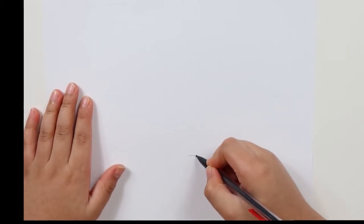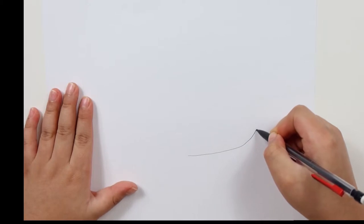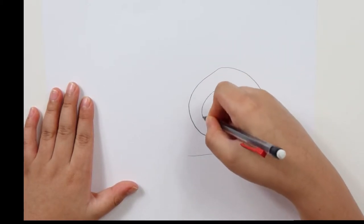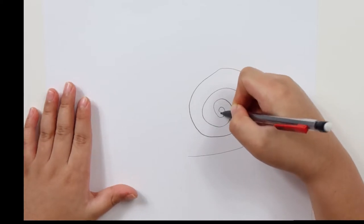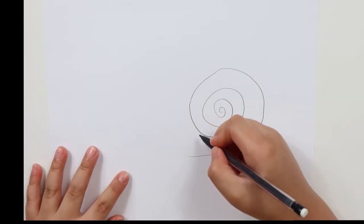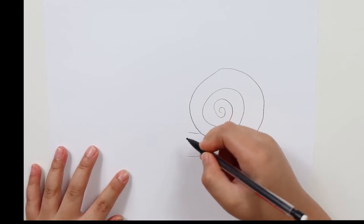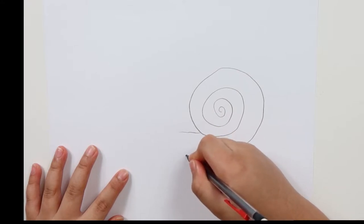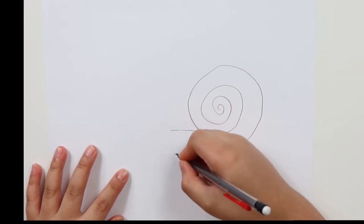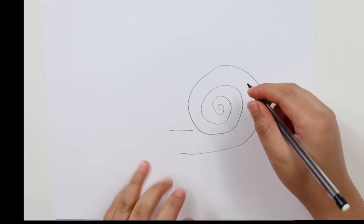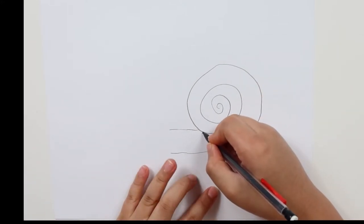First you want to start with the shell. Make it like a swirl shape, but then over here draw another line about here. Actually a little longer. And then you want to draw like this.